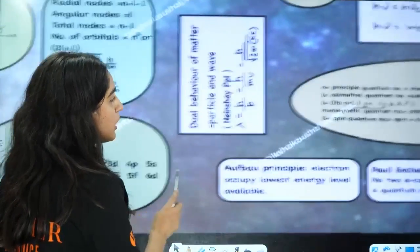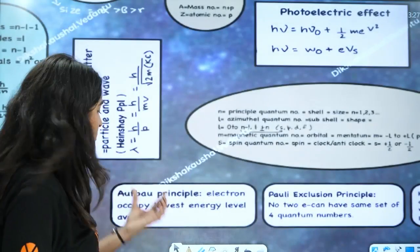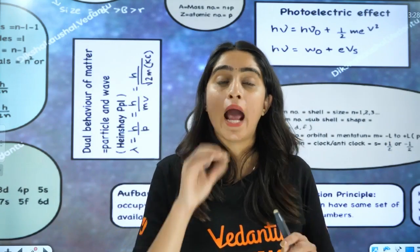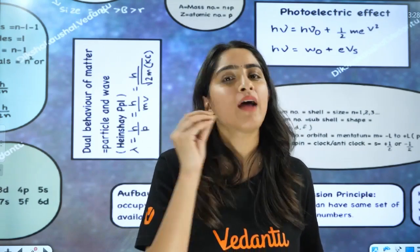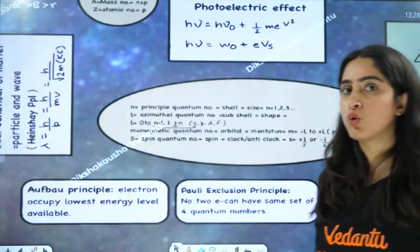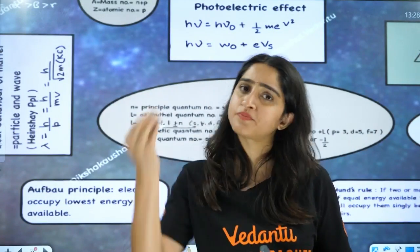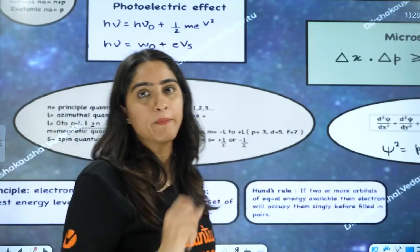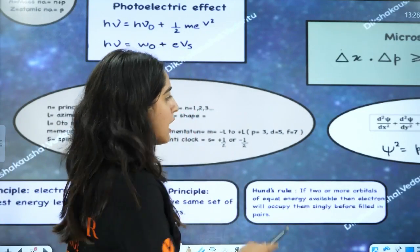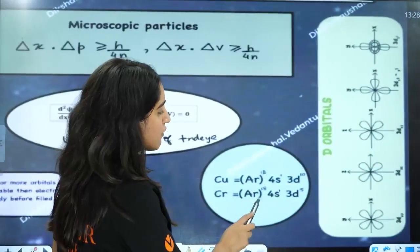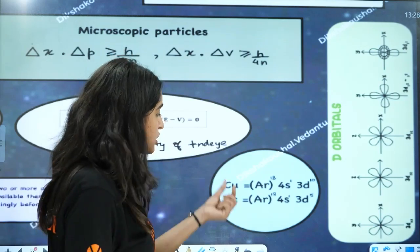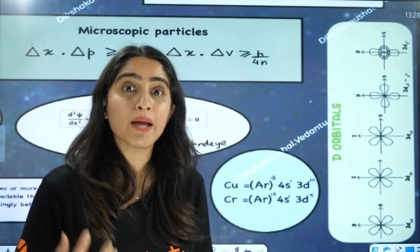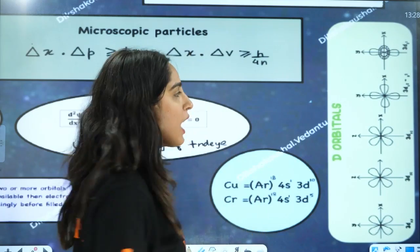How are electrons filled? We have three principles. The Aufbau principle states that electrons occupy lower energy to higher energy — that is the N plus L rule (or L rule for hydrogen atom). The Pauli exclusion principle states that in one orbital there should be only two electrons, and they must have opposite spin — one positive, one negative. Hund's rule states that for degenerate orbitals, electrons should be singly occupied first. There are exceptions: the exceptional electronic configurations of copper and chromium, where an electron jumps to 3D because half-filled and fully-filled configurations are more stable due to symmetry and high exchange energy.